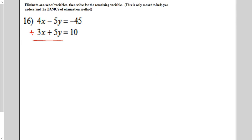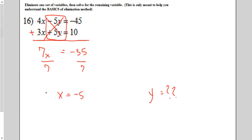Here's number 16. 4x plus 3x is 7x. Negative 5 plus 5y is 0. And negative 45 plus 10 is negative 35. Divide both sides by 7, and x equals negative 5. Again, to find the true solution, I need to find out what y is. But I've not asked you to do that. I just said to start and solve for the one variable that was still around after you eliminated one of them.